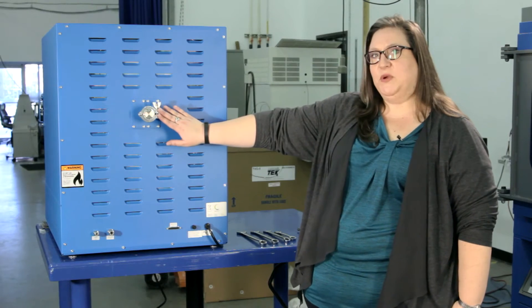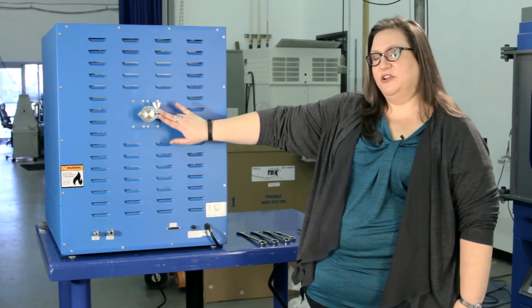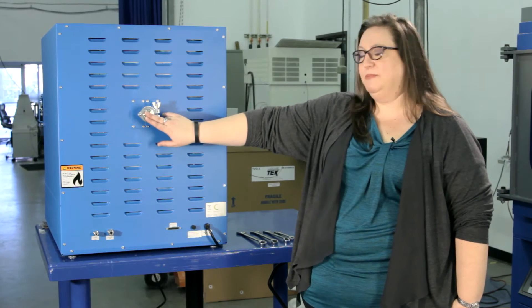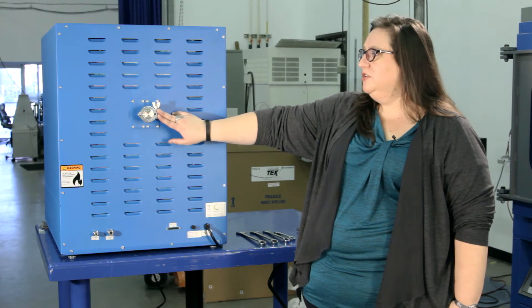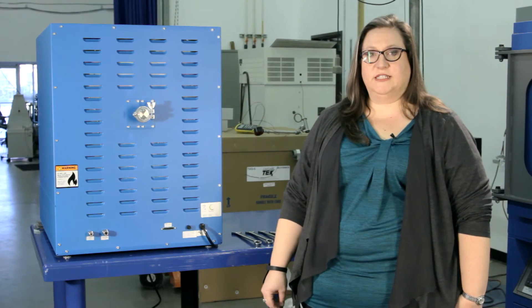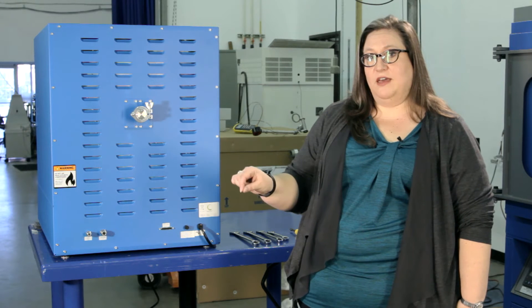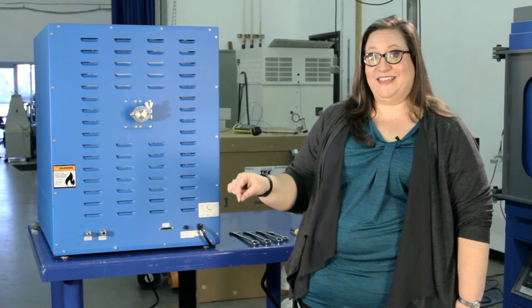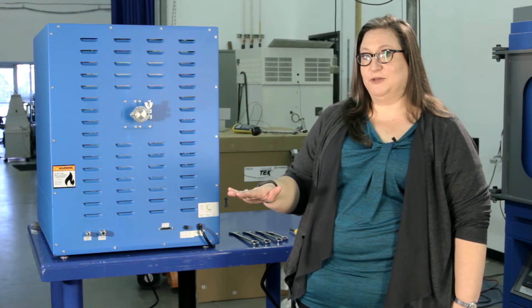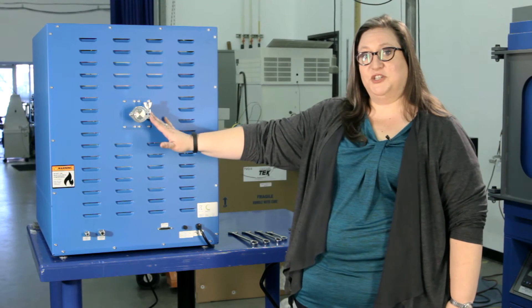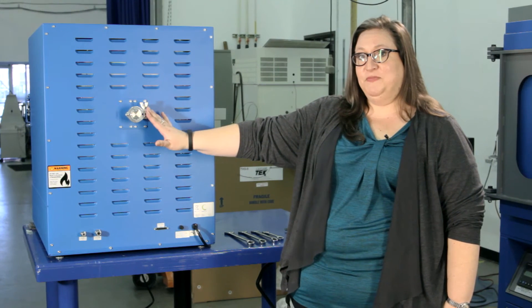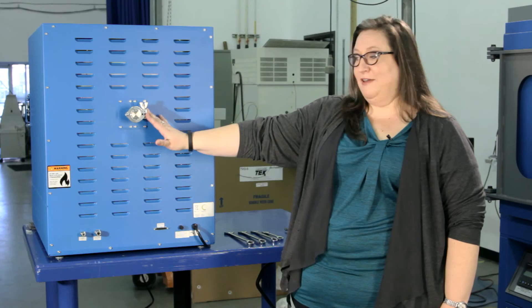This is a KF25 flange, standard vacuum fitting in the industry capped for future use. You can use this port to receive our accessory temperature probe which would show you the exact temperature of anything it's in contact with in the oven so you could monitor your product temperature. You could use this for our digital pressure gauge accessory or call me if you have another idea.